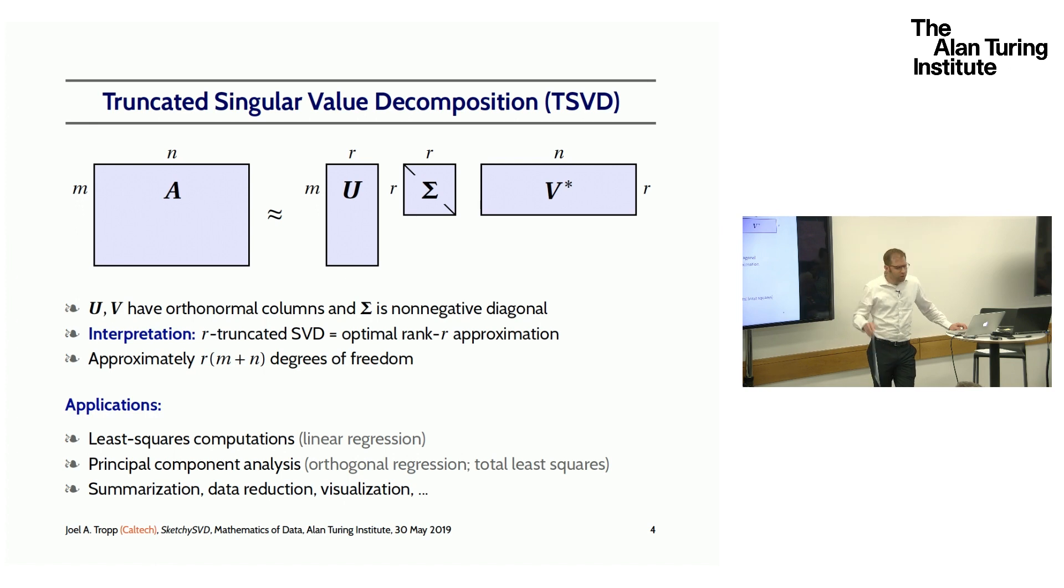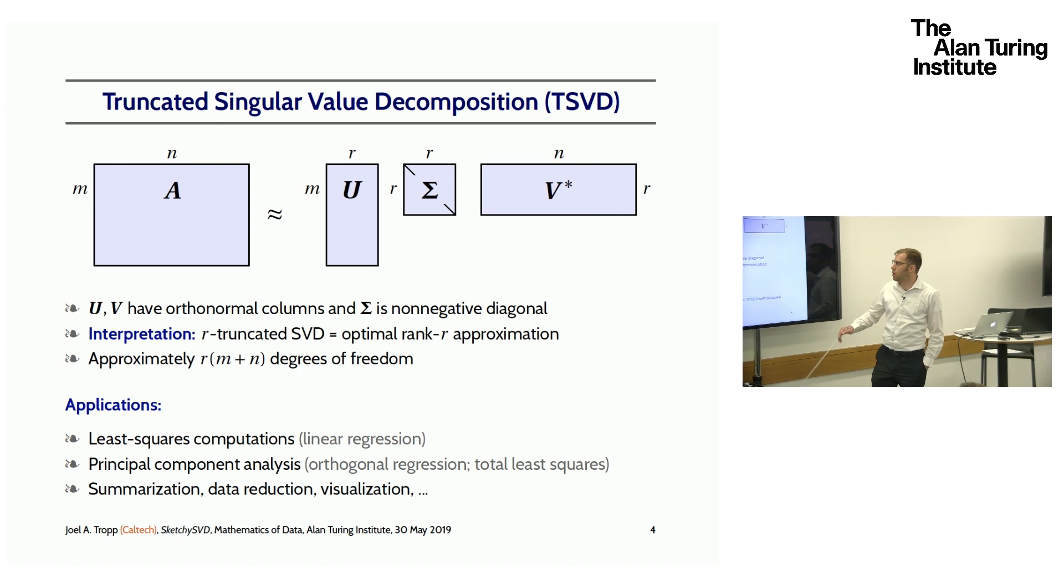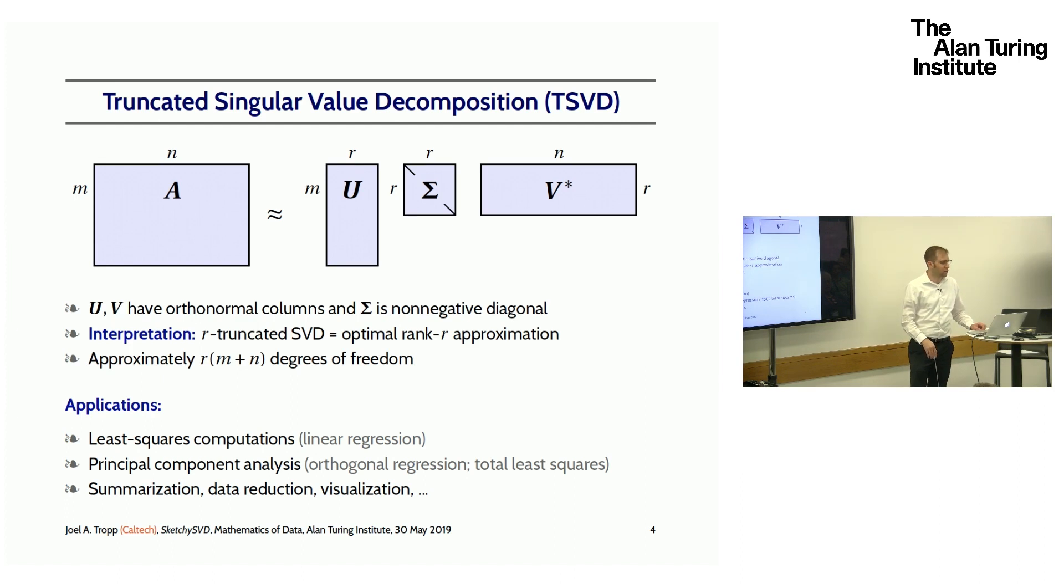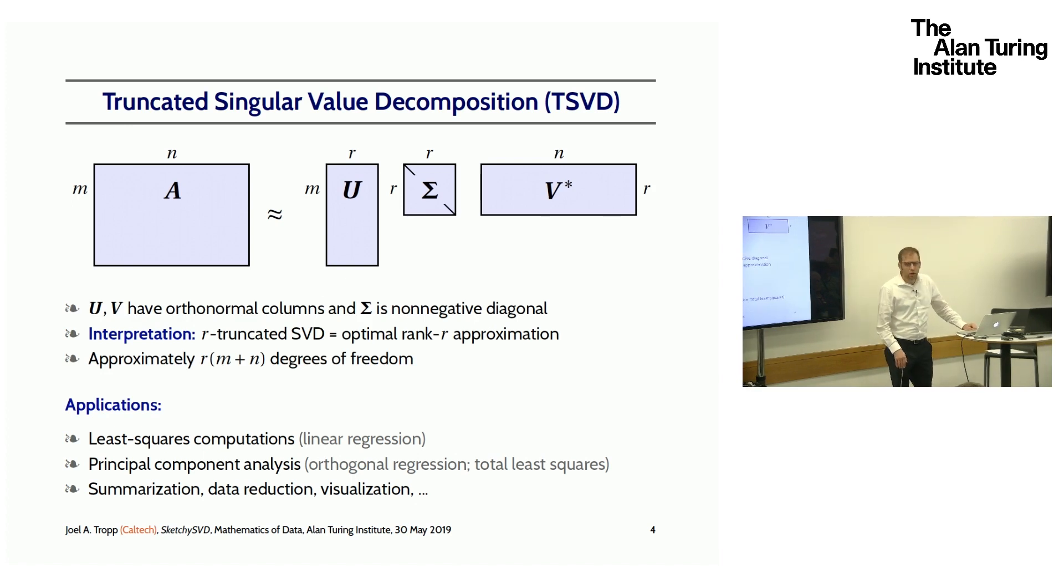The main reason that the truncated singular value decomposition is so wonderful, important, beautiful, charming, is that it gives the optimal rank R approximation of the matrix A with respect to the Frobenius norm, or in fact any unitarily invariant norm. Those are results attributed to Eckart, Young, and later to Mirsky. So what do we use this for? We use it for least squares computations, principal component analysis or orthogonal regression. It also has a lot of applications in data analysis for summarization, data reduction, visualization, and so forth. So all in all, a useful thing to have.